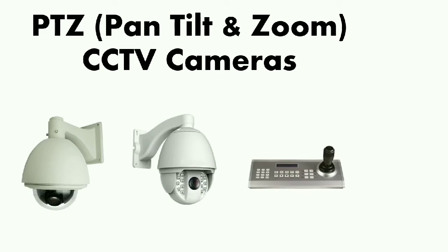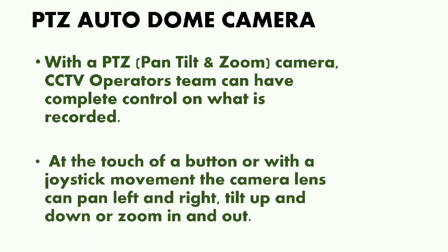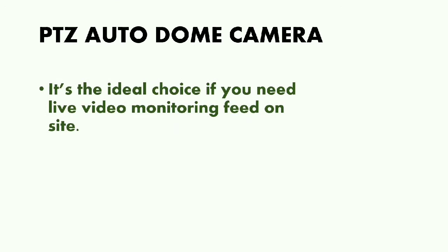Let's start learning about PTZ — pan, tilt, and zoom — CCTV cameras. With a PTZ camera, CCTV operators can have complete control over what is recorded. At the touch of a button or with a joystick movement, the camera lens can pan left and right, tilt up and down, or zoom in and out. It's the ideal choice if you need a live video monitoring feed on site.